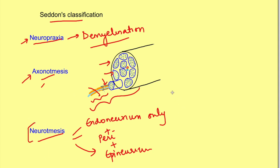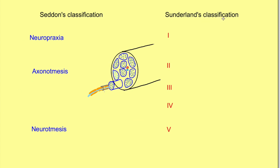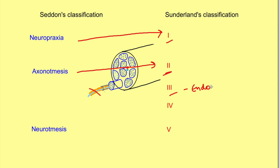In Seddon's classification, neurotmesis does not detail which connective tissue sheath is injured, which matters because it affects whether regeneration will occur. So a more detailed classification — Sunderland's classification — has five degrees. First degree is same as neuropraxia: functional loss. Second degree is same as axonotmesis: axonal discontinuity with all sheaths intact. Third degree adds injury to endoneurium. Fourth degree involves endoneurium plus perineurium injury, and fifth degree has all sheaths — endoneurium, perineurium, and epineurium — disrupted.